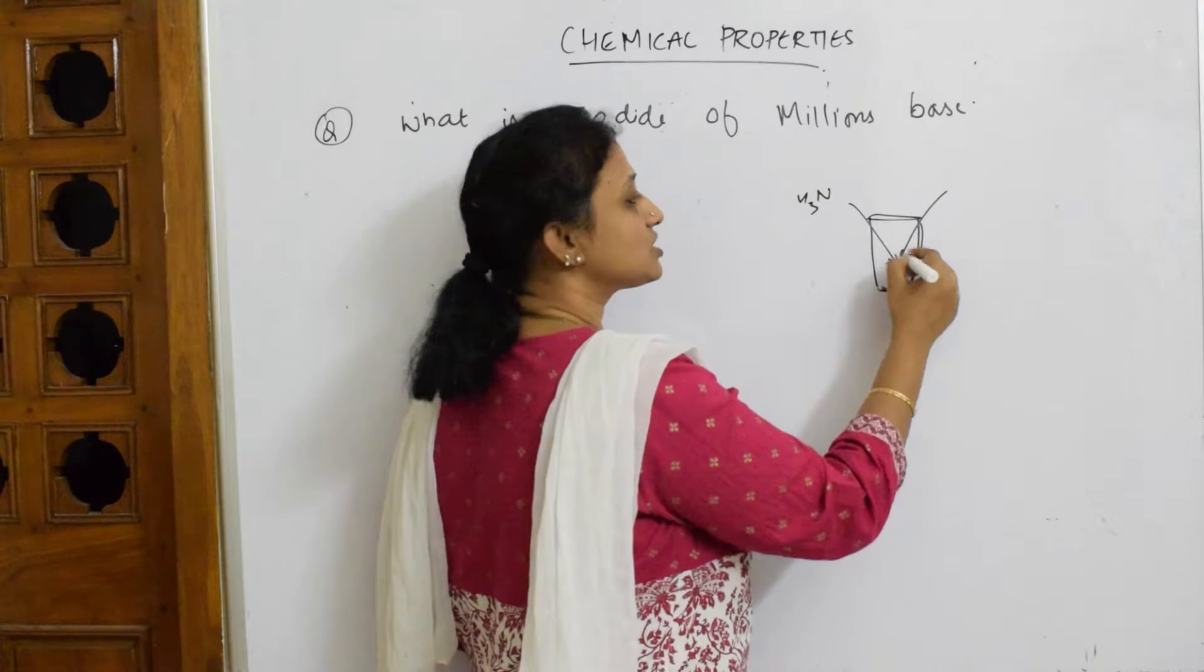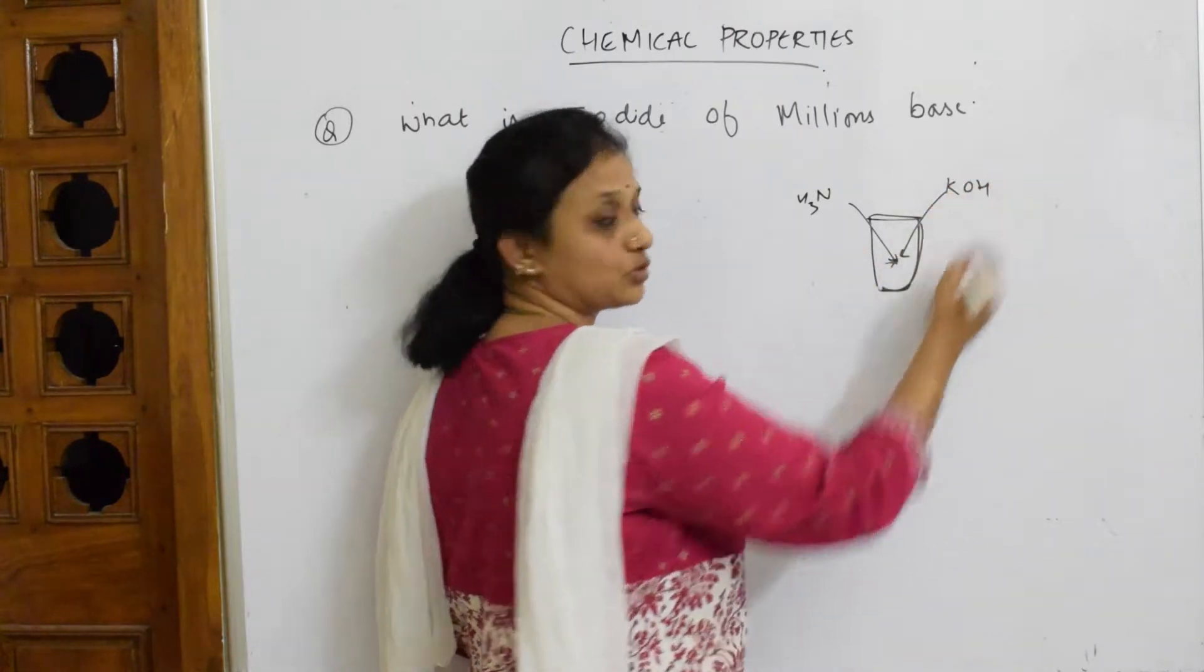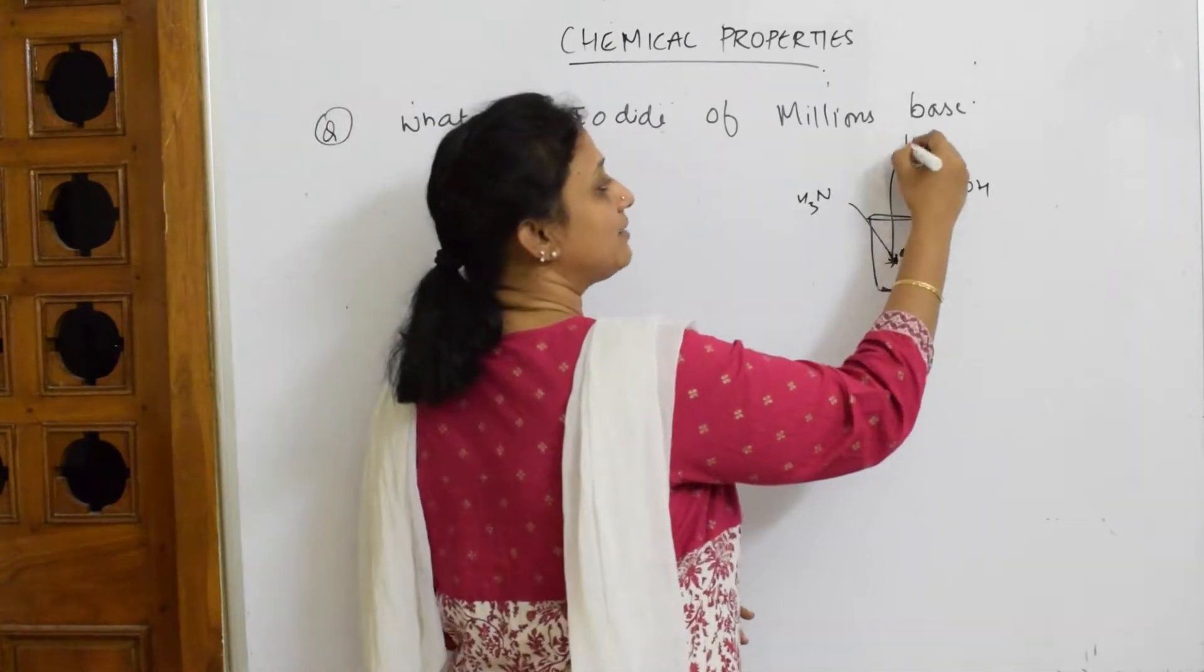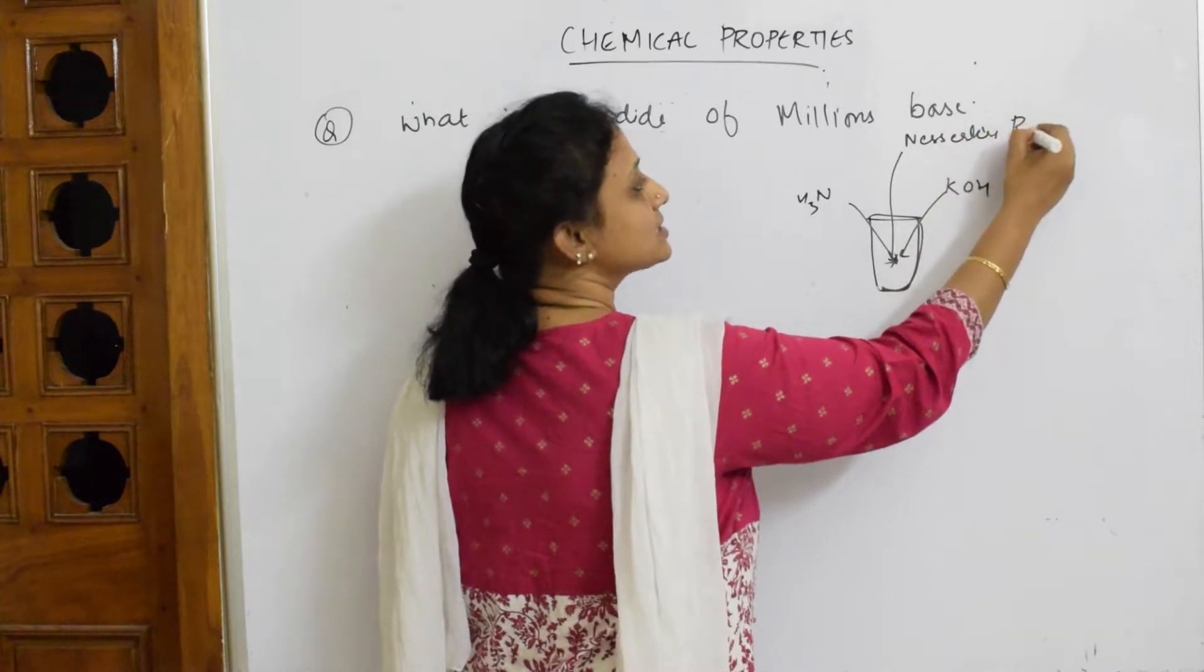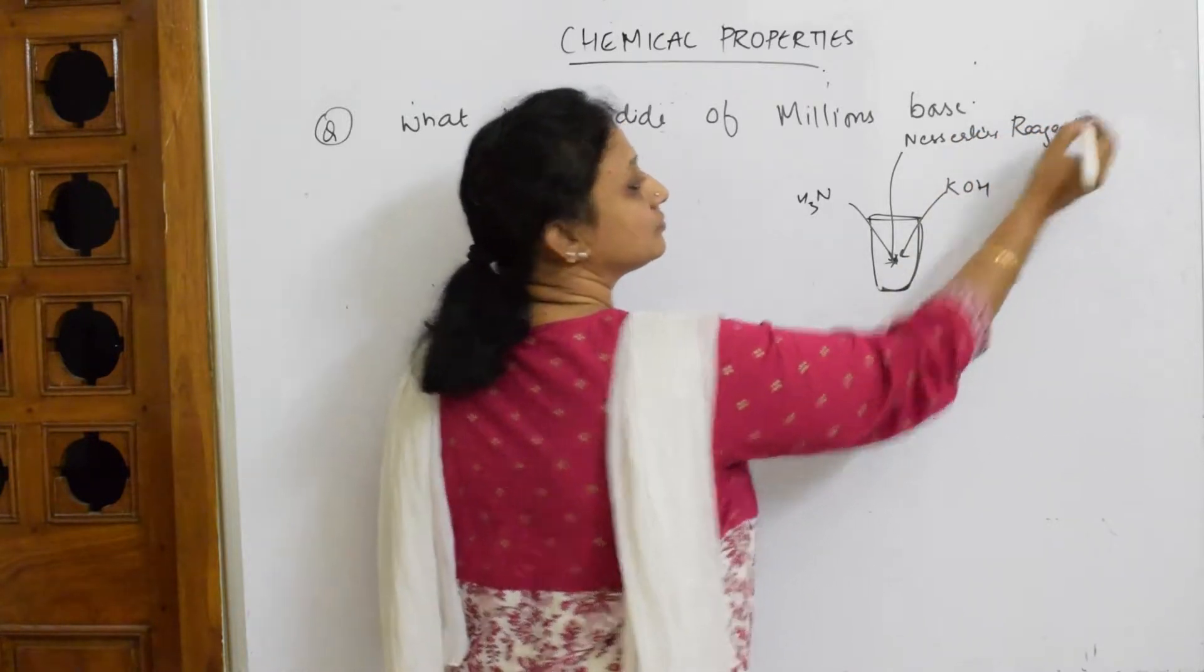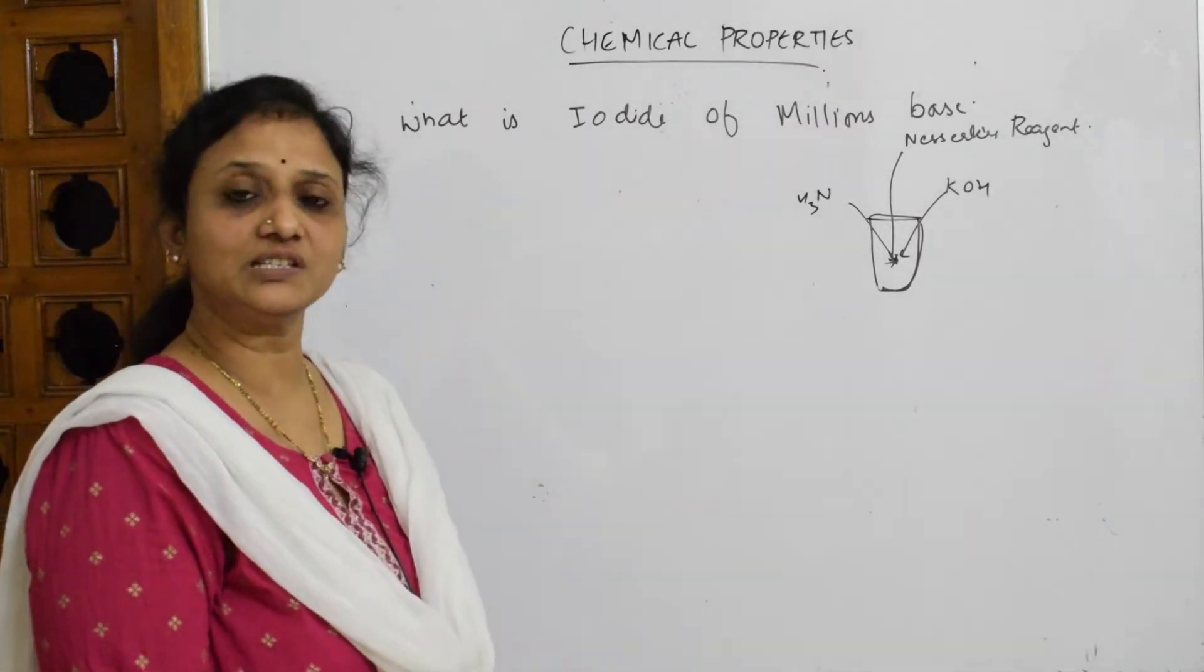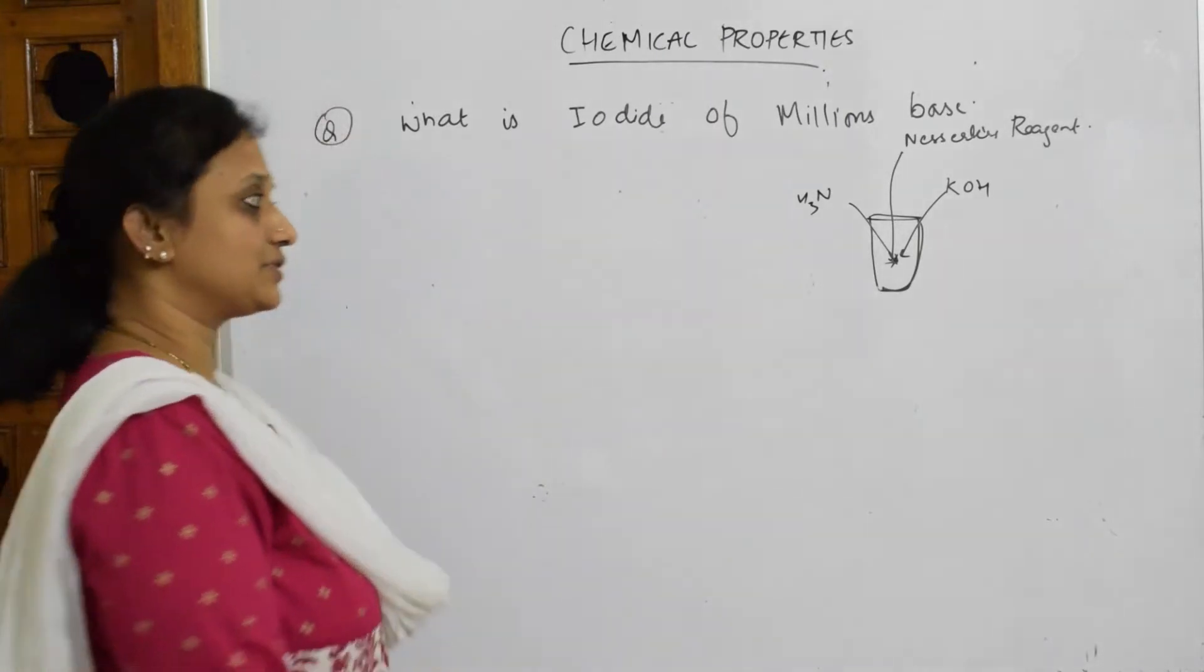To this ammonia sample solution you also added a base KOH. And to test ammonia you would have added an agent called Nessler's reagent. That particular reaction is nothing but iodide of million base.